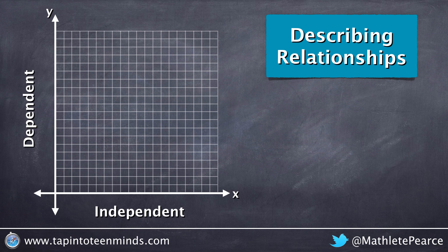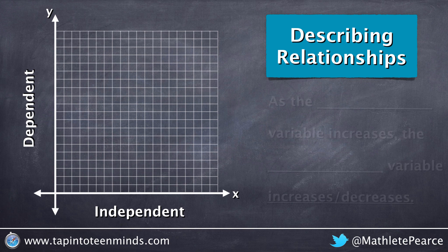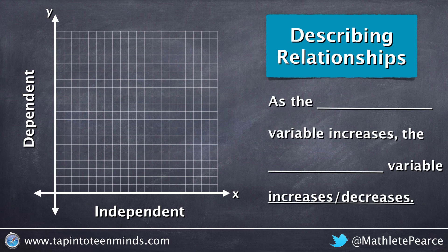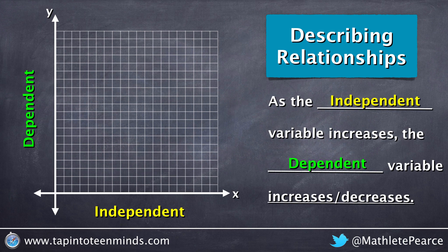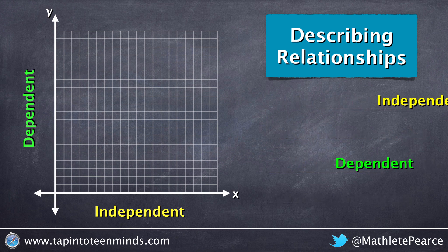One such method is to describe the independent variable increasing and what its effect will be on the dependent. For example, as the independent variable increases, the dependent variable either increases or decreases.